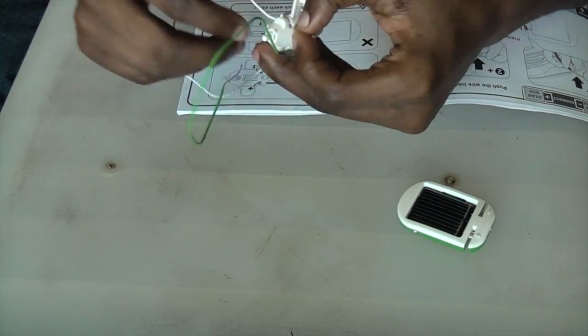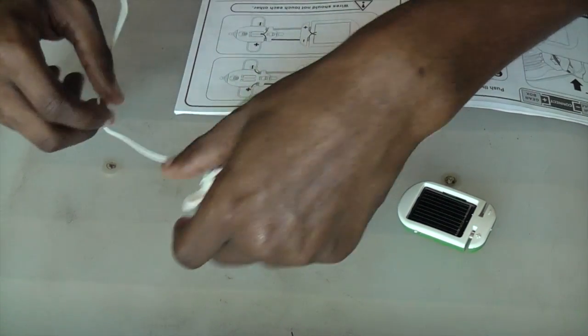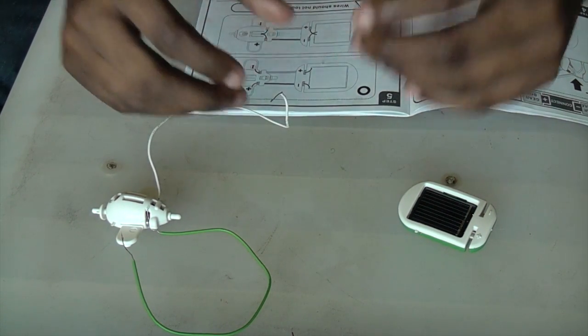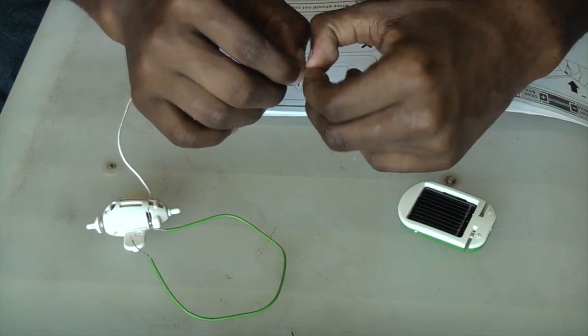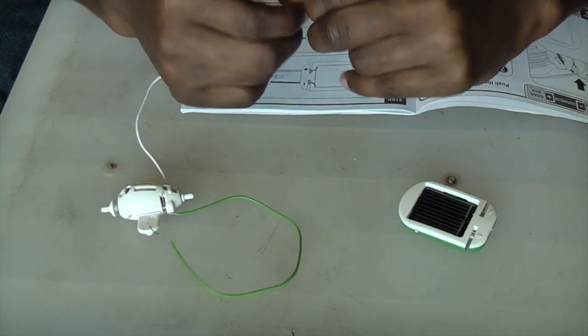Now you have both wires attached to the motor. Now the same thing again, you have the wire, make sure there's no loose strands on it.